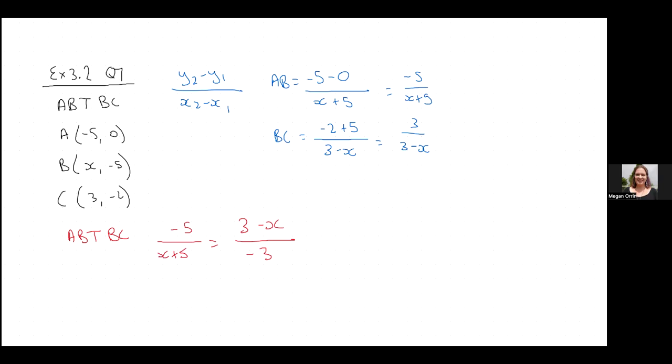Then like we always do, if we have two sets of fractions we're going to cross multiply. So if I do that I get negative 3 times negative 5 which is 15, and then I have two sets of brackets which I need to FOIL. So then I've got 15 over here. Then I've got my 3x plus 15 minus x squared minus 5x.